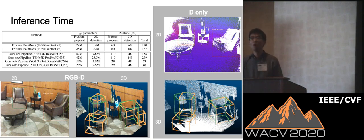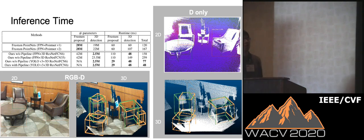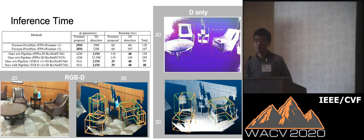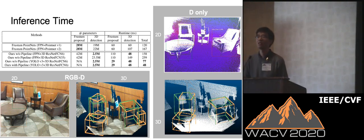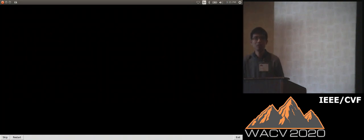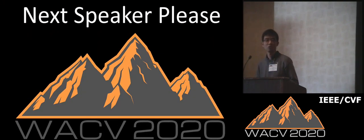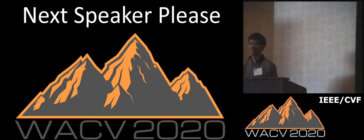Here we can see several examples: one from the RGB-D image and another from the depth image. We can see that the 3D detection based on the depth image performs very well. That's it. Thank you so much, and the poster is number 26 if you're interested.